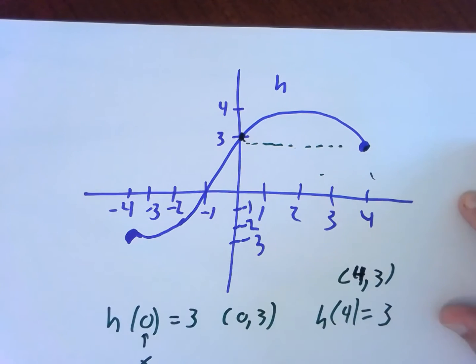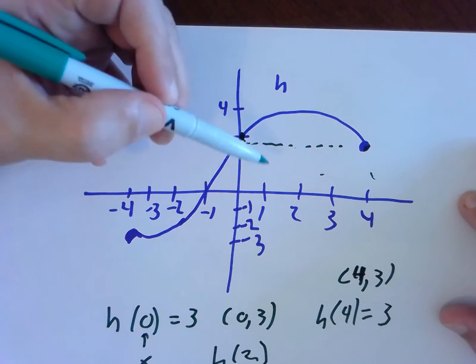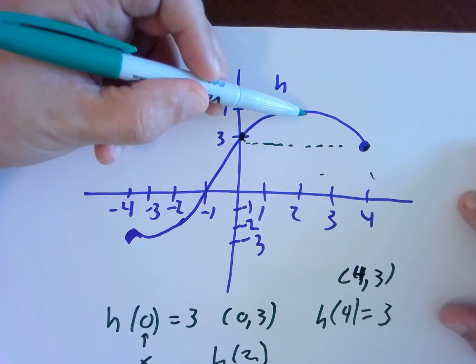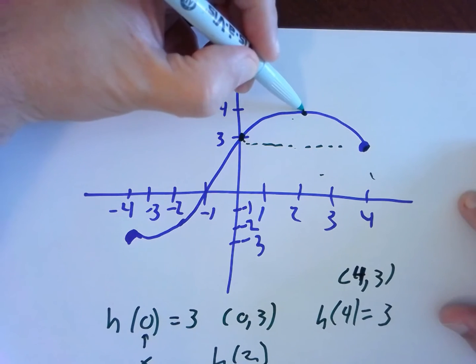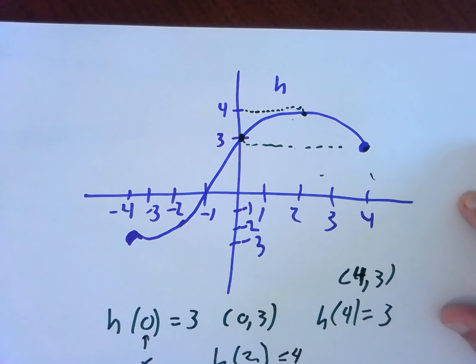So h of 4 is 3. Okay, what about h of 2? When x equals 2, we go up to our graph. Talking about that point right there. That looks to me like that y value would be 4. So h of 2 would be 4.